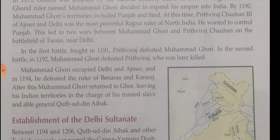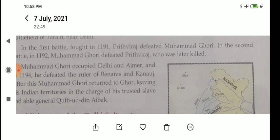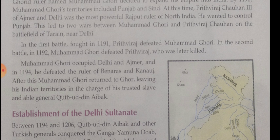Muhammad bin Tughlaq first shifted his capital, through which he lost a lot of money. After his death, his son Firuz Tughlaq became the next ruler and made some reformations. He was a great builder — Firuz built many towns and cities such as Jaunpur and Firozabad.